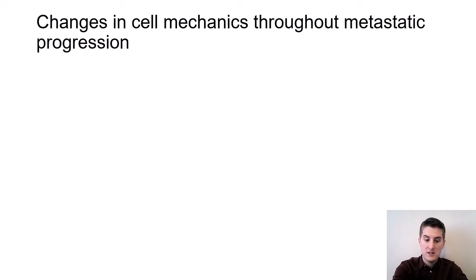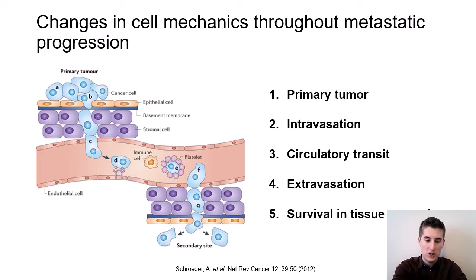I'm interested in studying the mechanics of cells during the progression of cancer. Malignant cells go through several stages during this process as they escape the primary tumor and circulate in the bloodstream and invade distant organs. The environmental context is a very important factor, but it also makes it very difficult to measure cell mechanics in each of these contexts.